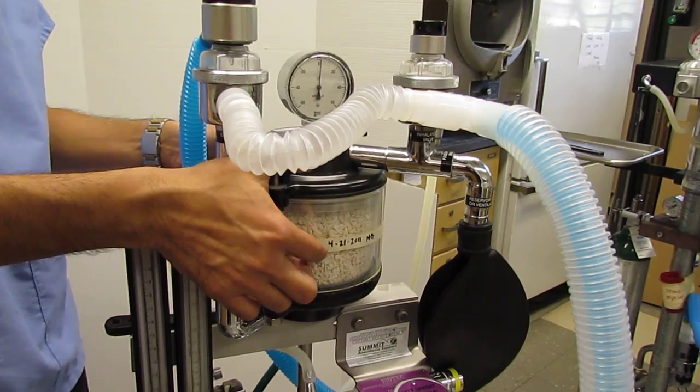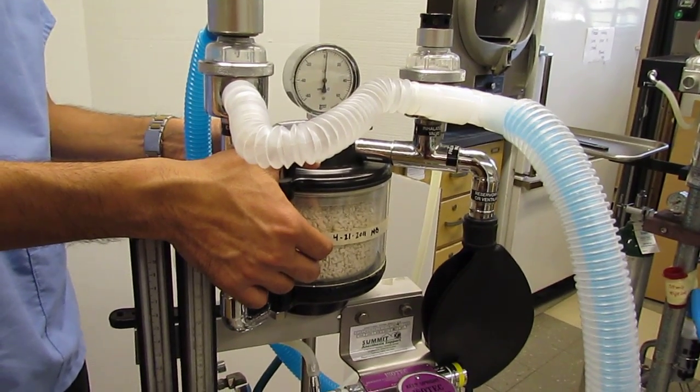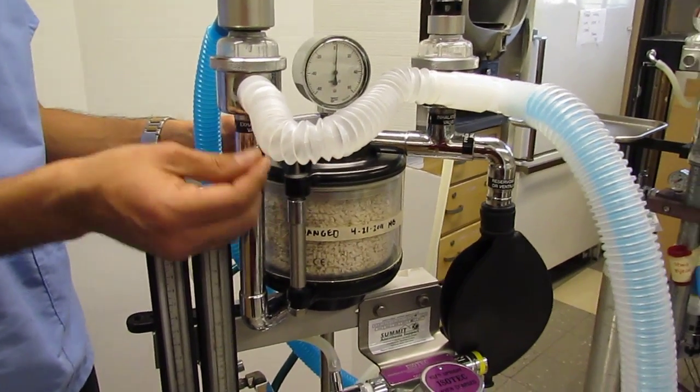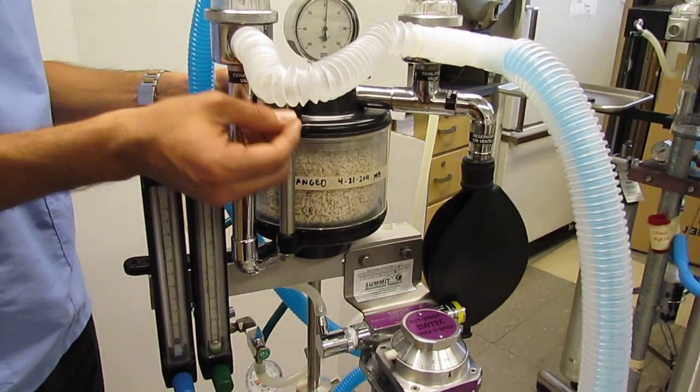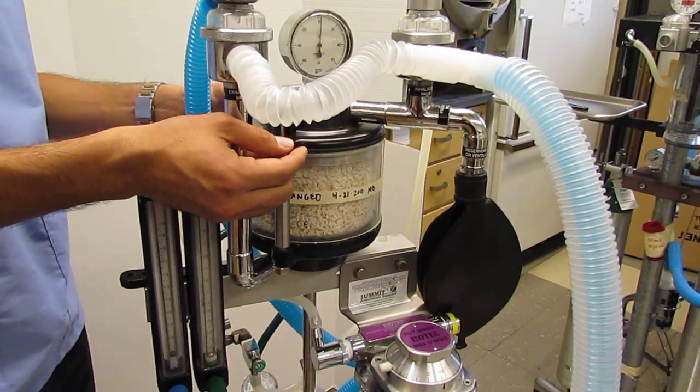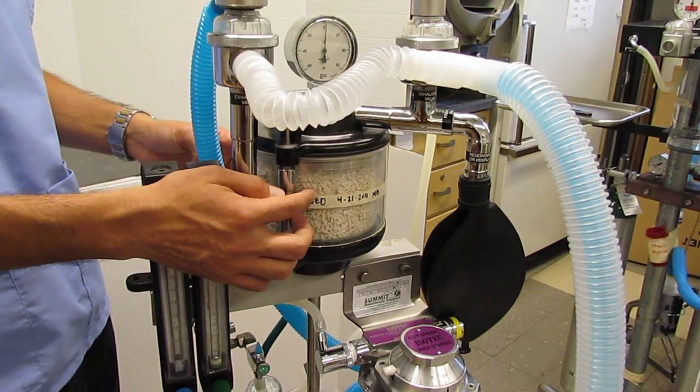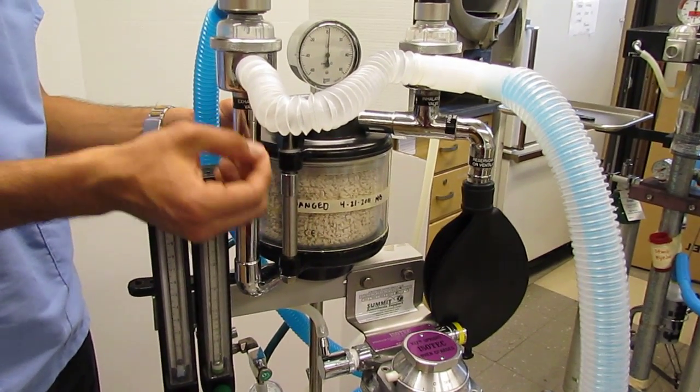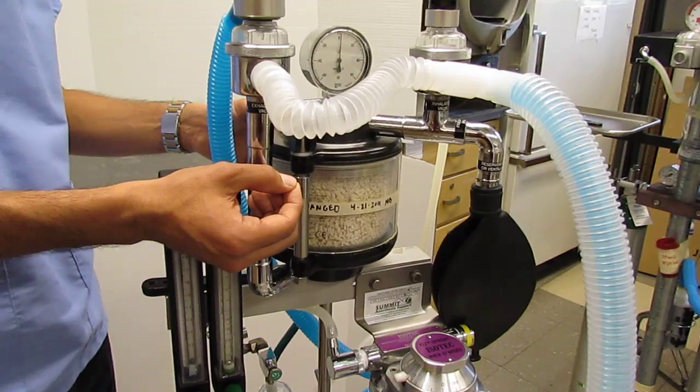It pulls CO2 out of the circulating gas through a chemical reaction that makes the sodalime go from a soft granular structure to a very rock-hard structure. So one way you can tell that your sodalime has been exhausted is by actually trying to crush it. And if you can't crush it, then it's been exhausted.